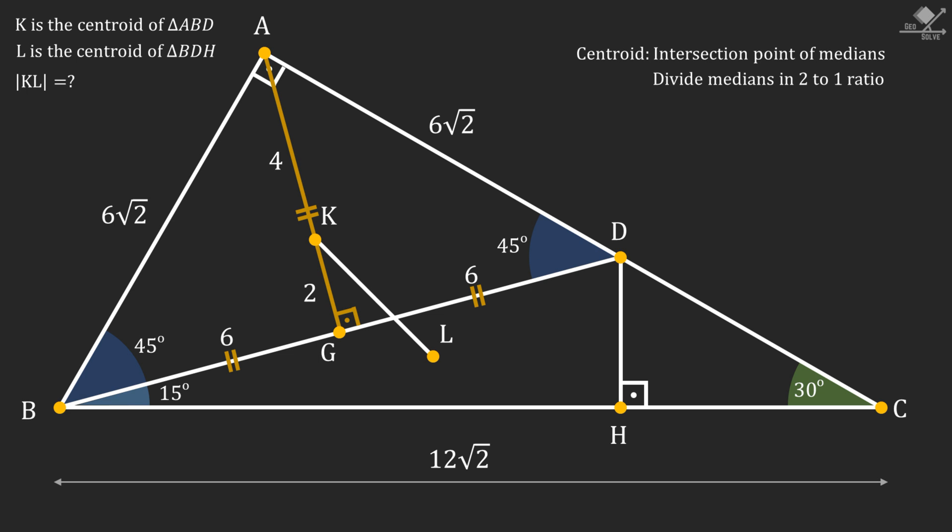We will repeat a similar approach on the lower triangle. Let's start with constructing a median passing through points H, L, and G.